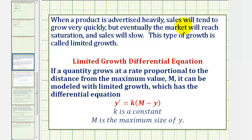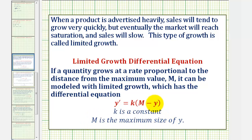When a product is advertised heavily, sales will tend to grow very quickly, but eventually the market will reach saturation and the sales will slow. This type of growth is called limited growth. For the limited growth differential equation, if a quantity grows at a rate proportional to the distance from the maximum value m, it can be modeled with the differential equation y prime equals k times the quantity m minus y, where k is a constant and m is the maximum size of y.